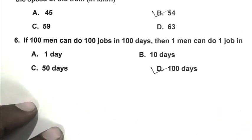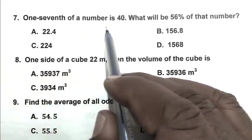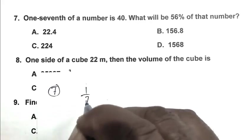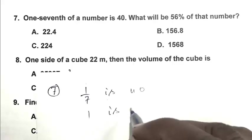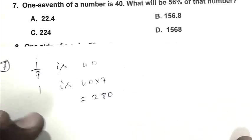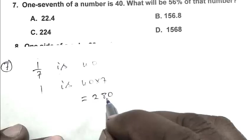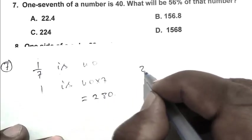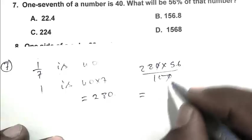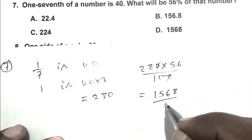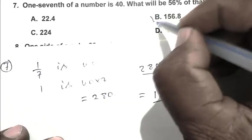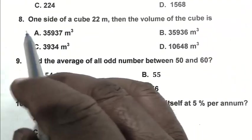Question number 7: One-seventh of a number is 40. What will be 56 percent of that number? So friend, if one-seventh is 40, then 1 is 40 multiplied by 7, which is 280. So friend, the number is 280. So 56 percent of 280 is 280 multiplied by 56 upon 100. So friends, it becomes 1568 upon 10, which is 156.8. So B is the right answer.